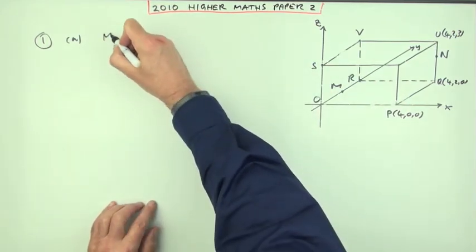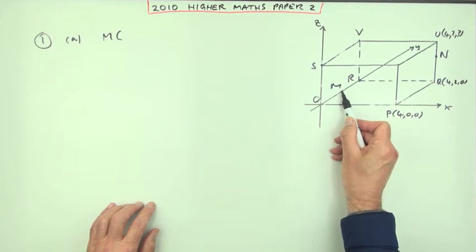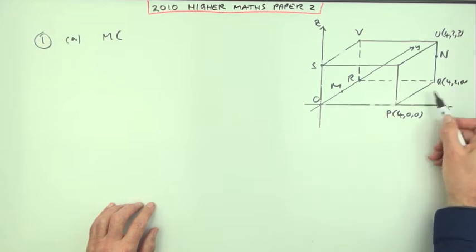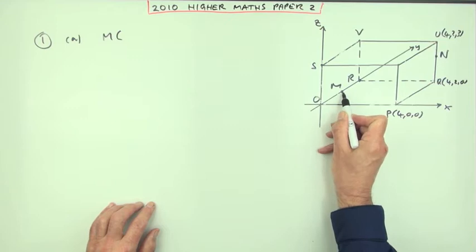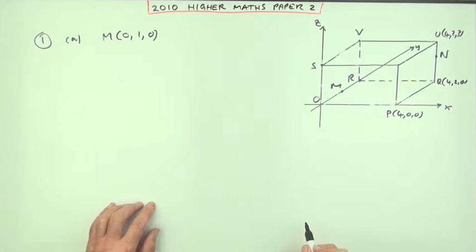So M first of all. Well, where is M? It said that M was the midpoint, which means that it's halfway between O and R. How far is that? Well that's two back, so that's one back. So it means you go along none, one back and none up. Along none, one back and zero up.